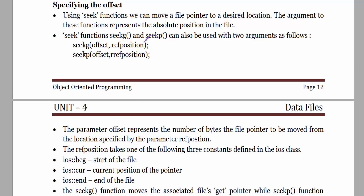Using the seek function, we can move a file pointer to a desired location, and the argument to these functions represents the absolute position in the file. The seek functions seekg and seekp can also be used with two arguments: the first one is offset, and the second one is reference position.